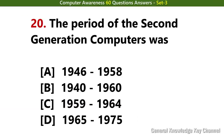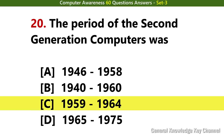The period of the second generation computers was? Answer option C: 1959 to 1964.